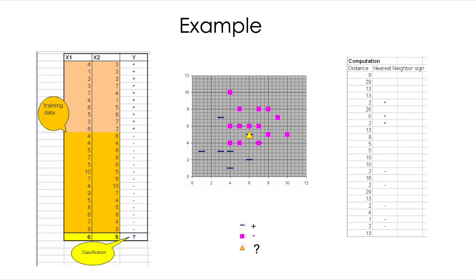Here is a simple example with a table of two-dimensional points in a binary classification setup with two possible classes. You can play around and see what the classification will be for different positions in the 2D plane. For example, for this yellow triangle in its current position, if we use one nearest neighbor, the classification will clearly be a blue line. But as we start using more neighbors, we will likely get the pink square classification. We need to calculate the distance and see the class of the k nearest neighbors.